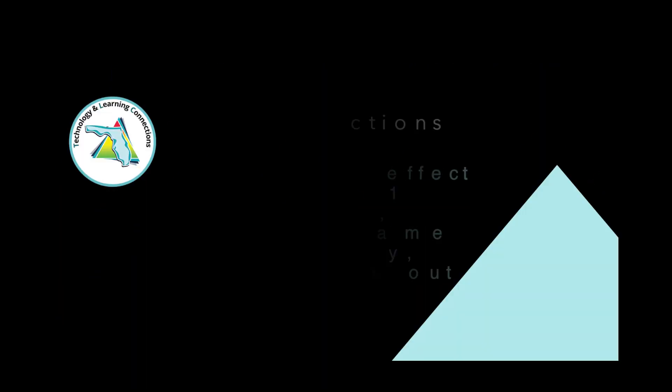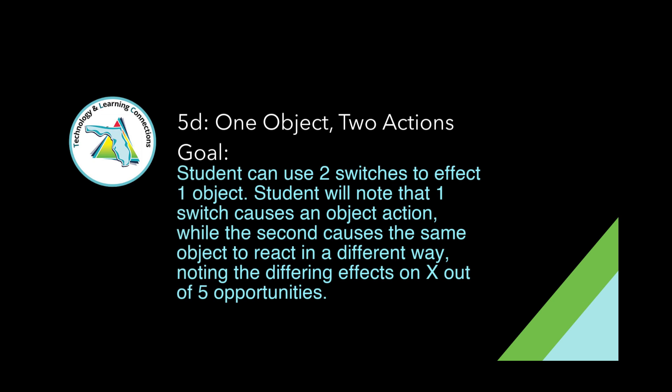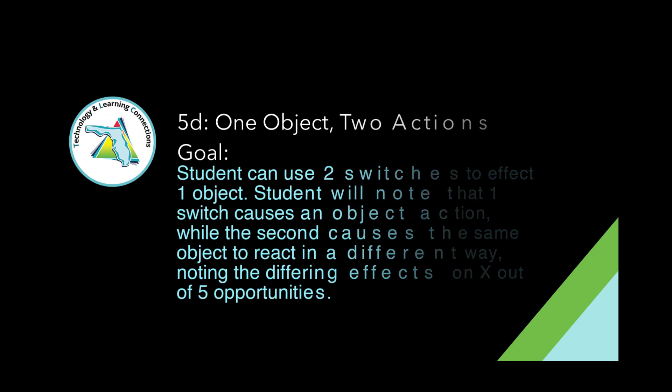An example of a goal for Level 5D, One Object, Two Actions, might sound something like: the student can use two switches to affect one object. The student will note that one switch causes an object action, while the second switch causes the same object to react in a different way, noting the differing effects on X out of five opportunities.